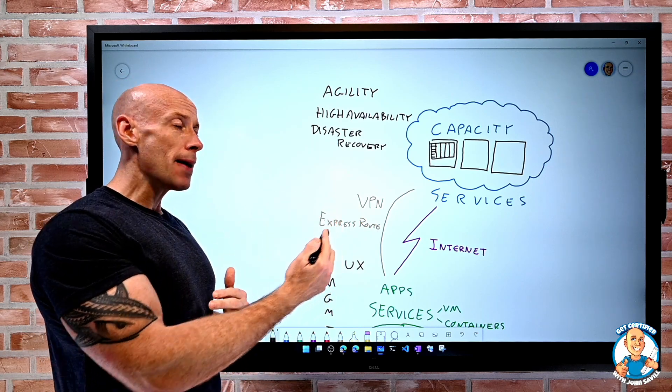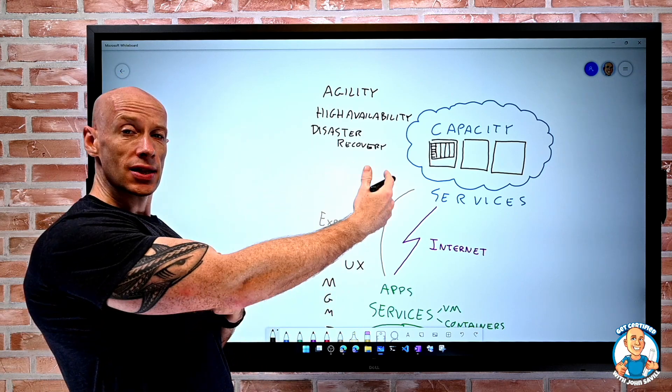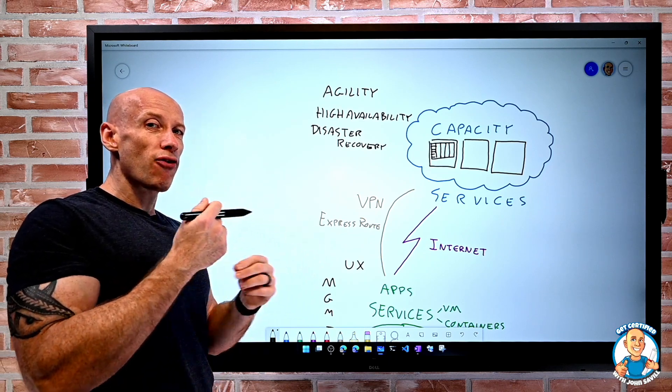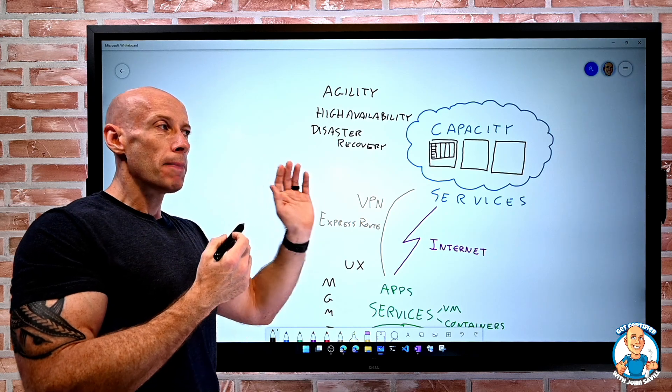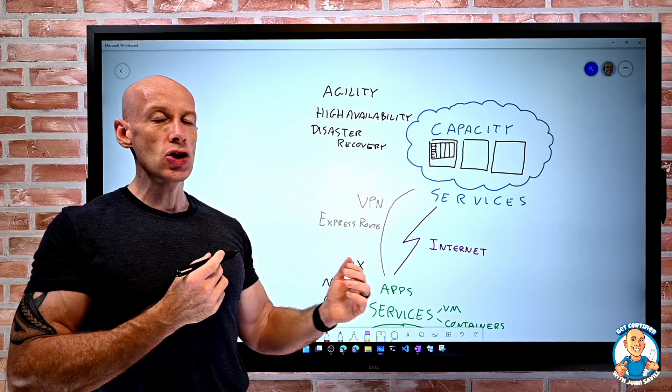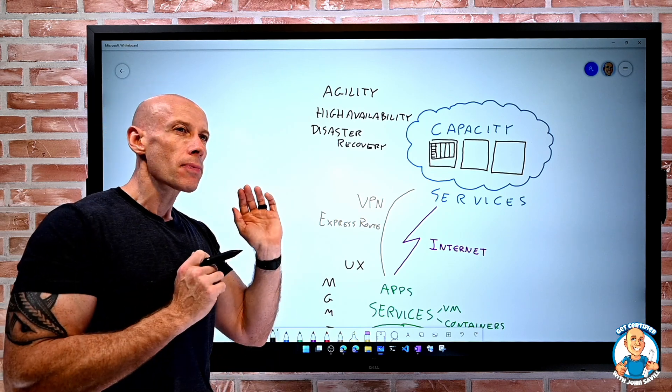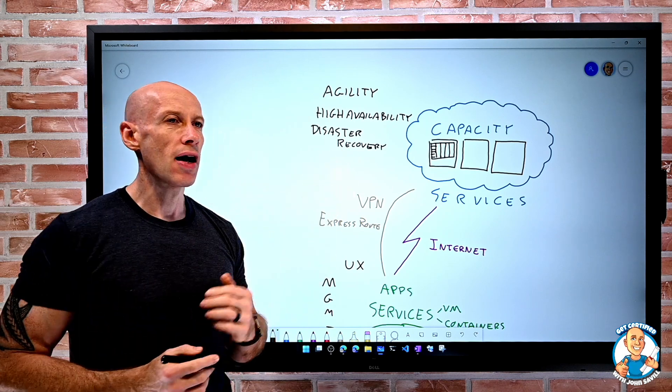So now by using that, I can asynchronously replicate, which means, hey, I'm not going to impact the performance of my application, but I'm going to send it to that other region as quickly as I can without impacting my performance. But I'm going to have that disaster recovery capability.